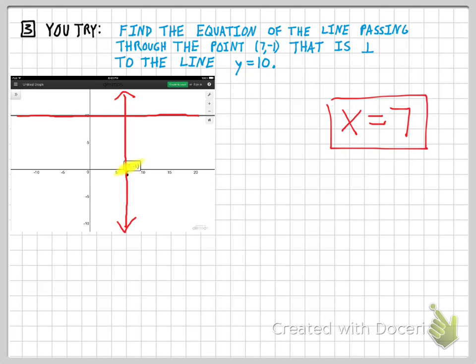Just a quick review. Horizontal lines will always have an equation that's y equals, and vertical lines will always have an equation that's x equals.